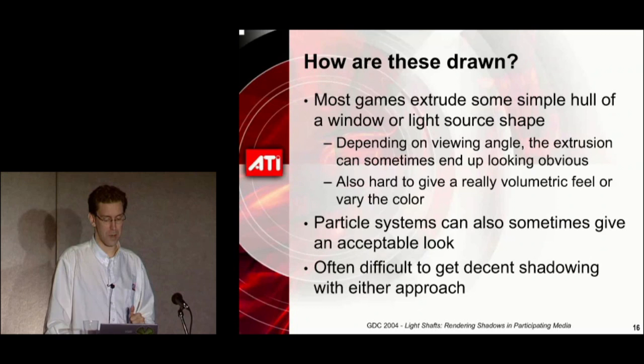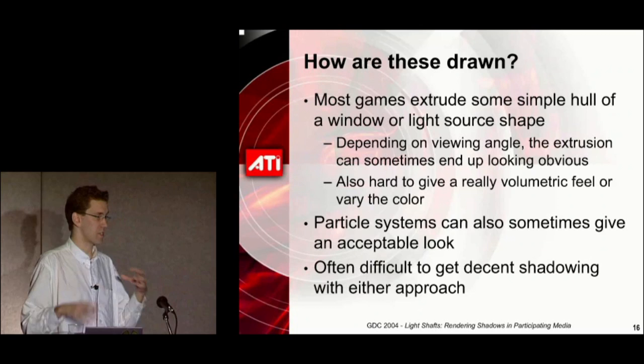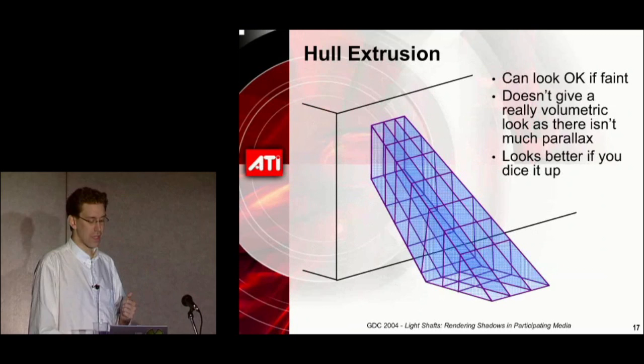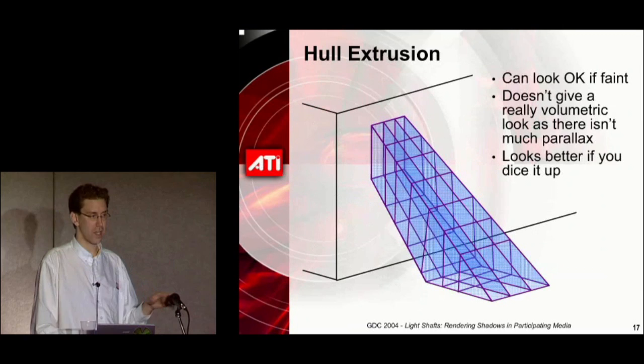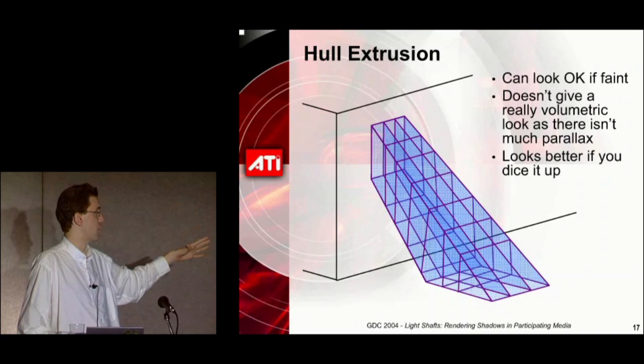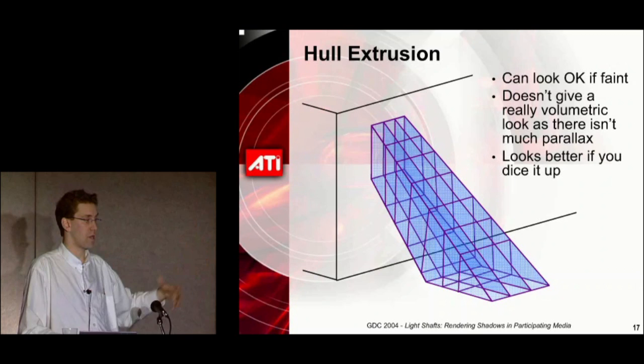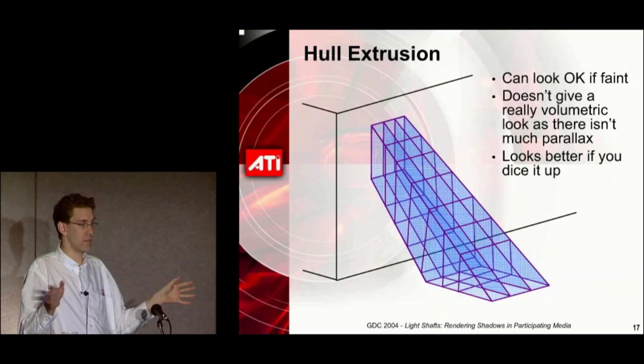With particles or with these extruded hull shapes, it's difficult to get decent shadowing. A lot of games will draw something like a pyramid shape — because the light, depending on where the imaginary light source is beyond that window, those rays may splay out if it's close or be pretty much parallel if the light source is really far away.